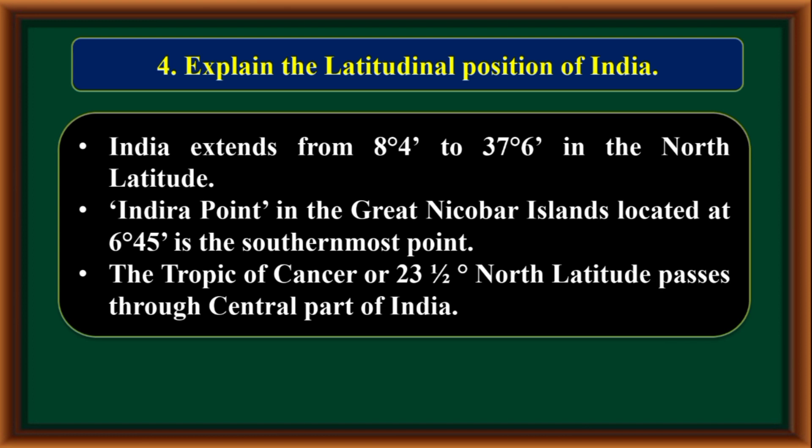Explain the latitudinal position of India. India extends from 8 degrees 4 minutes to 37 degrees 6 minutes north latitude. Indira Point in the Great Nicobar Islands, located at 6 degrees 45 minutes, is the southernmost point. The Tropic of Cancer, at 23 and a half degrees north latitude, passes through the central part of India.